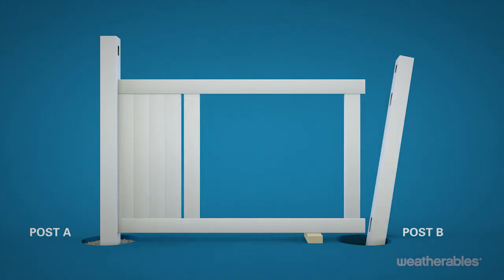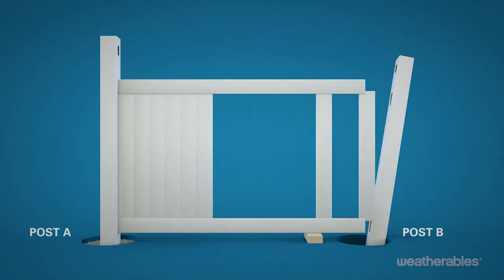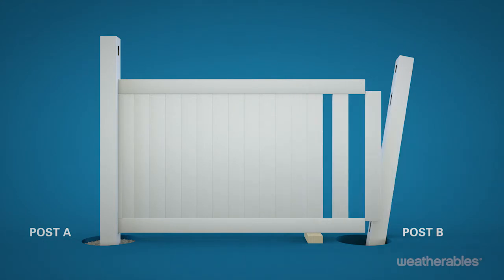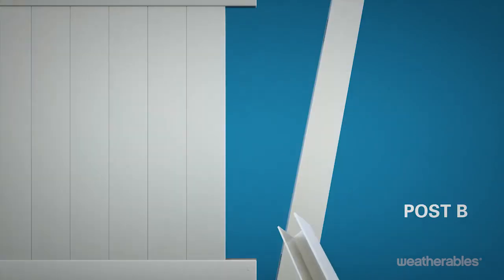Continue sliding the pickets between the rails until all of the pickets are in place. As you proceed, you'll always leave one picket at the beginning position. This prevents the rails from pinching and scratching the pickets. Install the remaining U channel on the last picket so it will rest along post B.